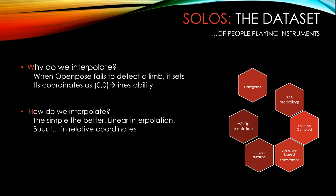But why do we interpolate? Well, when OpenPose fails to detect a limb, it sets its coordinates as 0,0. This produces an instability because the network is seeing a smooth signal and suddenly everything goes to zero. This means high gradients, high acceleration, high velocity. And how do we interpolate? Simple is better — linear interpolation.